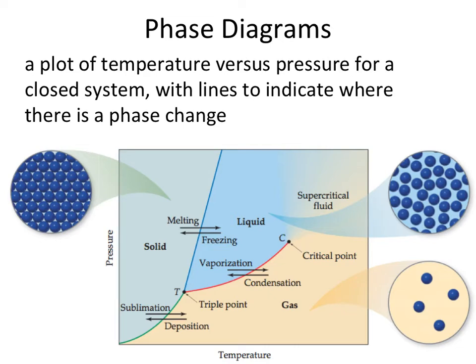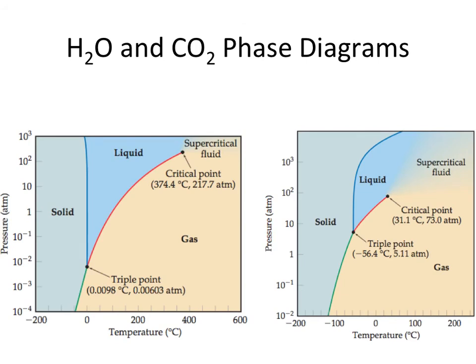Let's go ahead and look at a couple of specific curves. On the left we have the phase diagram for H2O, and on the right we have the phase diagram for CO2. If we look at our scale, we have our pressures on the left-hand side.